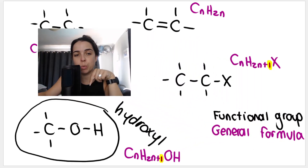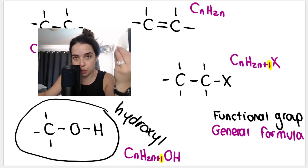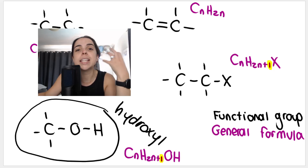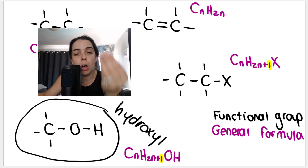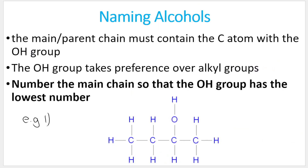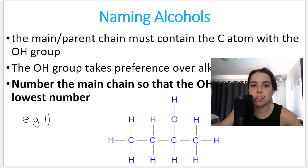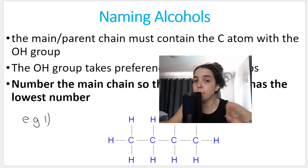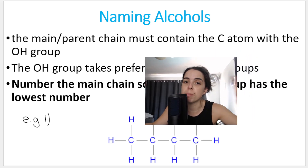And for alcohols, we have the structural formula of the functional group. The name of the functional group is a hydroxyl group — so if asked what the functional group of an alcohol is, you must give the answer hydroxyl. For naming, the parent chain or main chain — very, very important — must contain the carbon atom with the OH group. The carbon atom with the OH group can never be in a branch; it has to be part of the main chain.